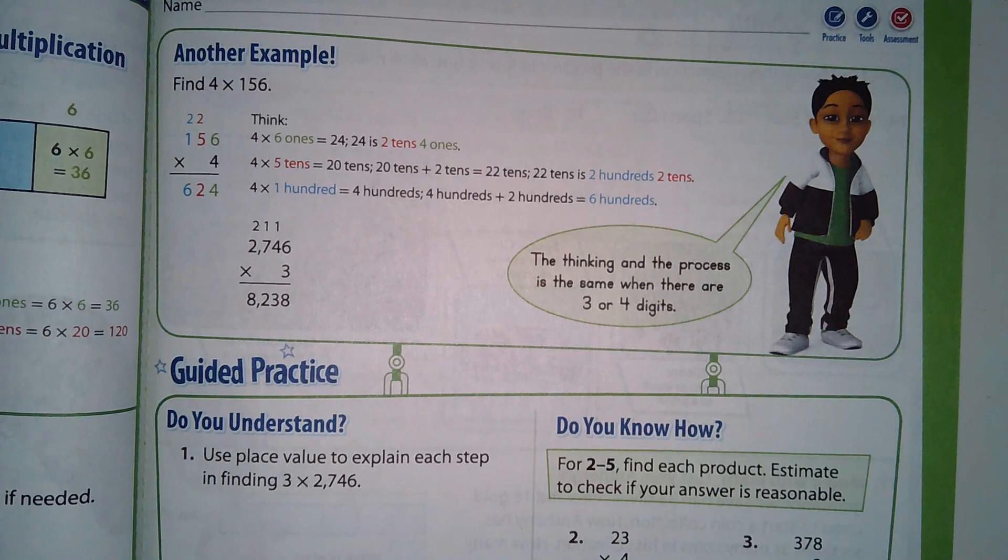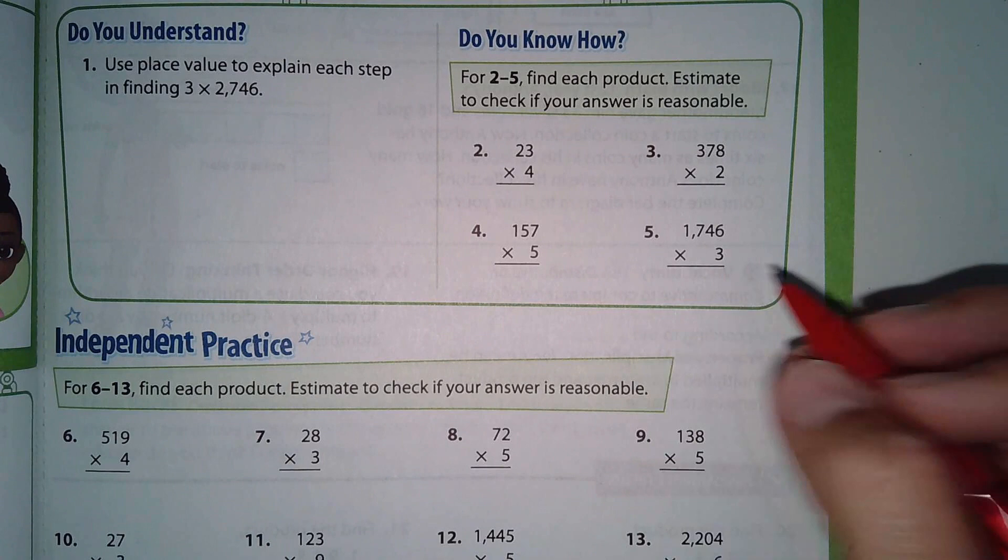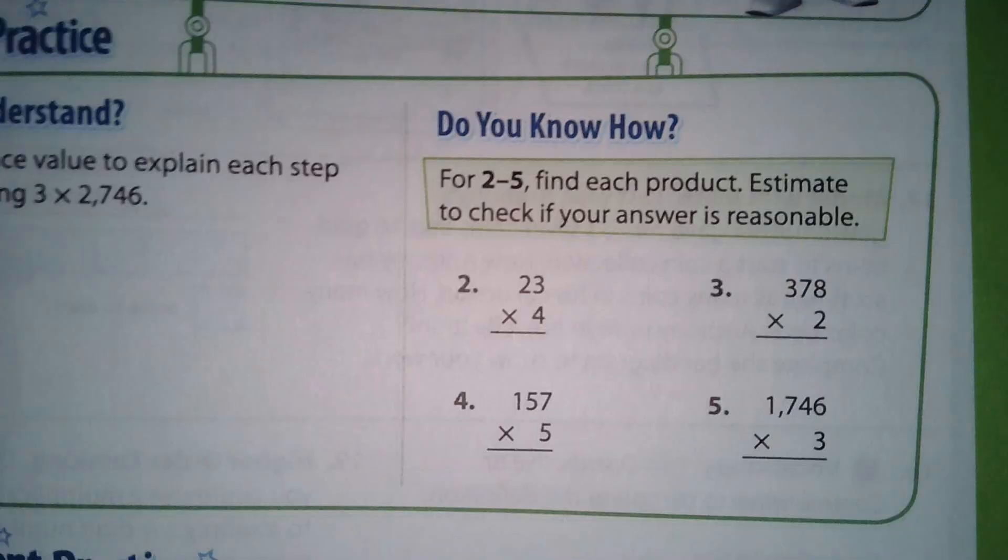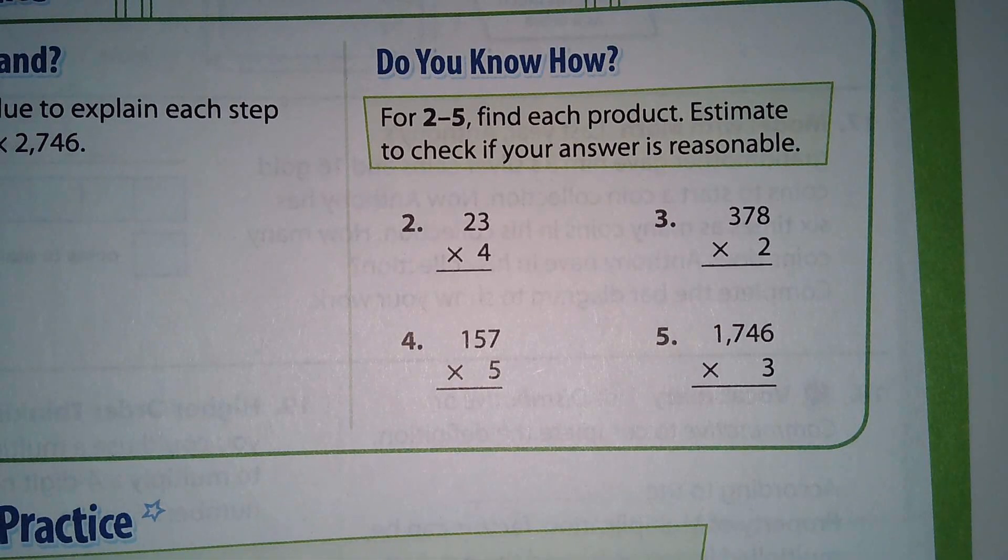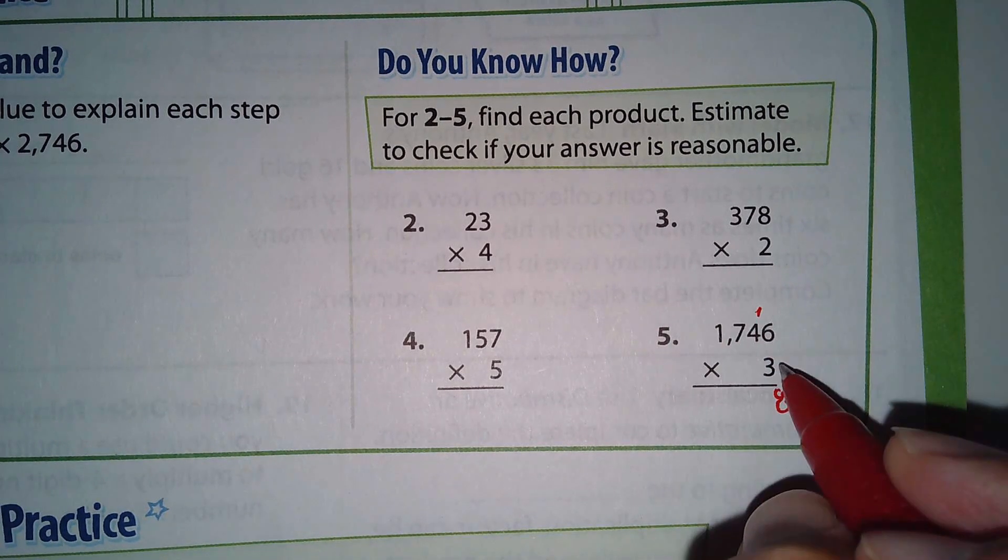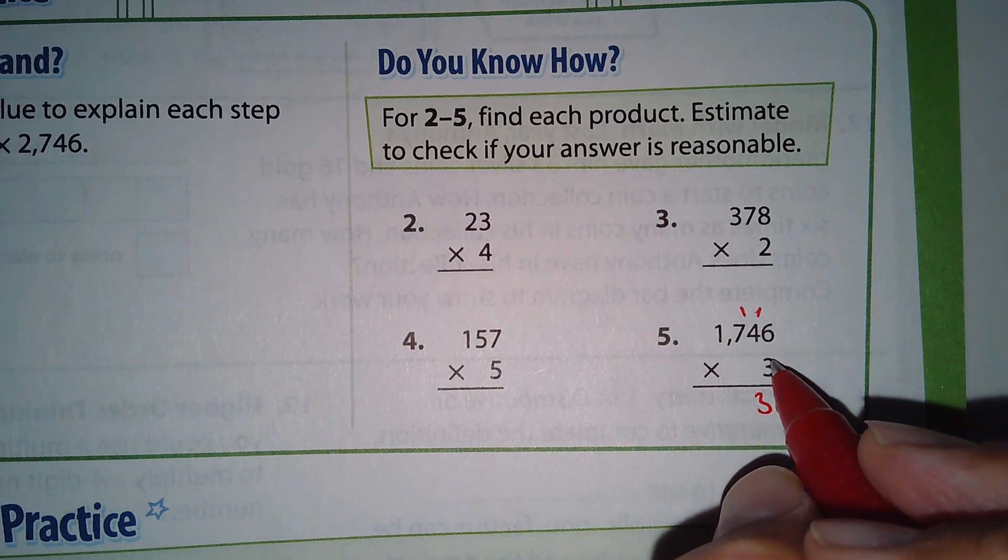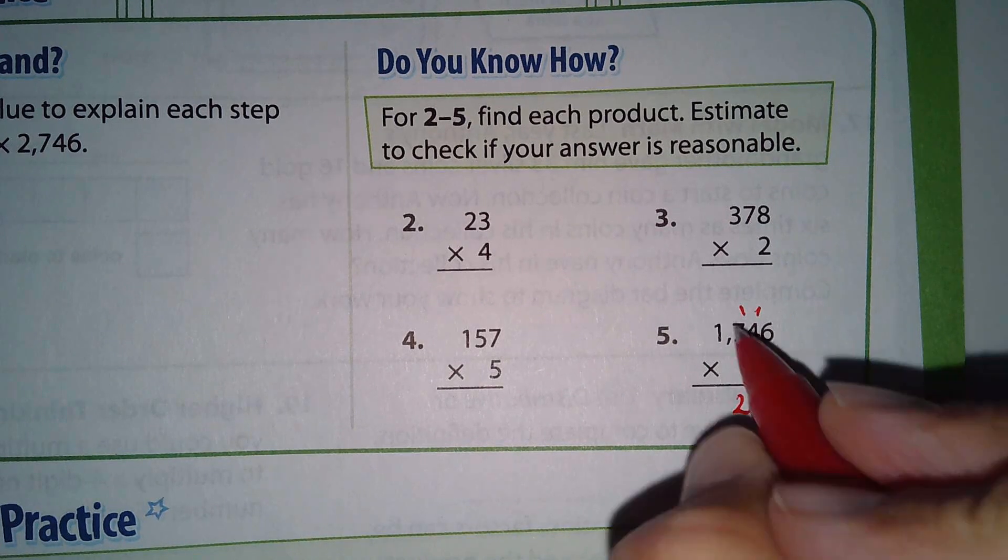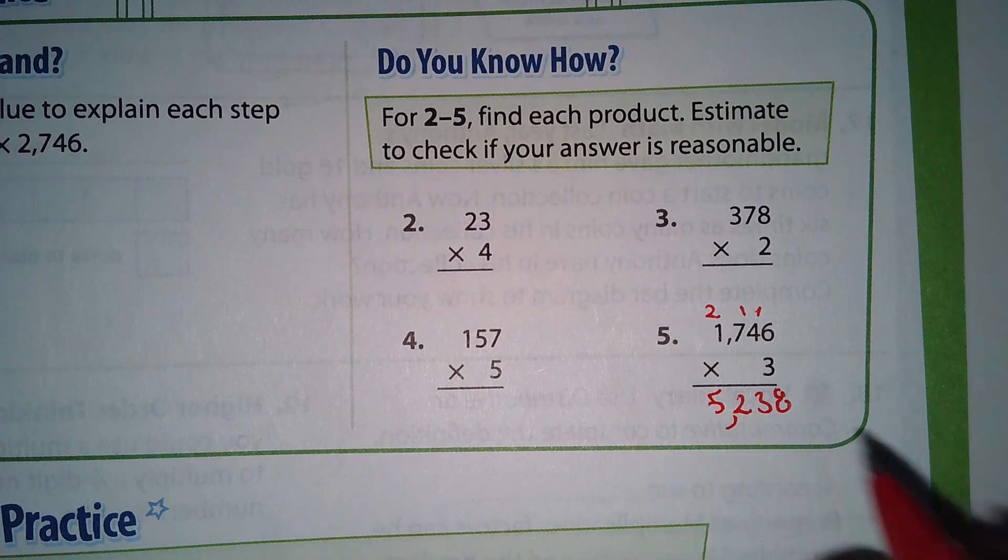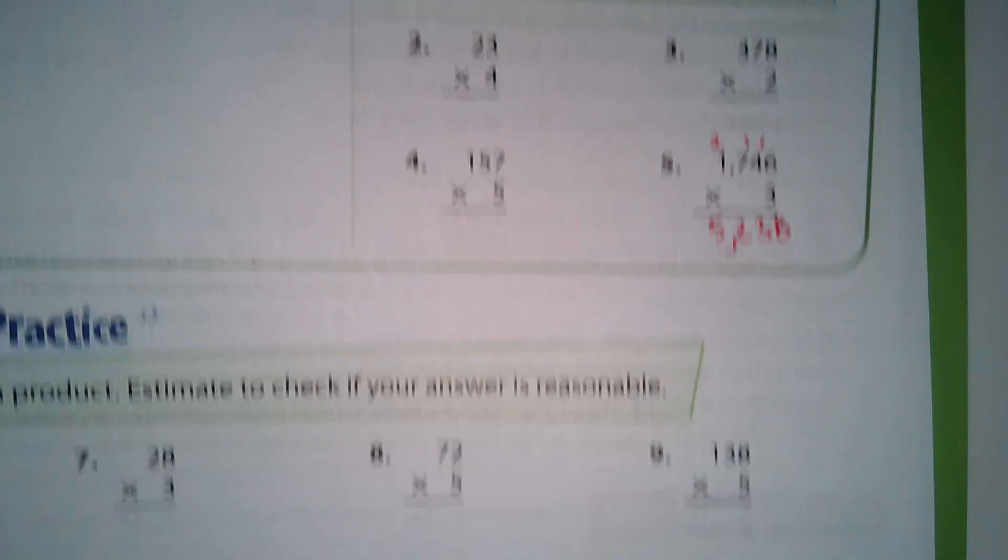I'm going to do a couple of these here. Let's look at number 5 for a moment. I'm on page 91, number 5. Three times six is 18, put down the eight, carry the one. Three times four is 12, plus one is 13, put down the three, carry the one. Three times seven is 21, plus one is 22, put down the two, carry the two. Three times one is three, plus two more is five. So the answer is 5,238.